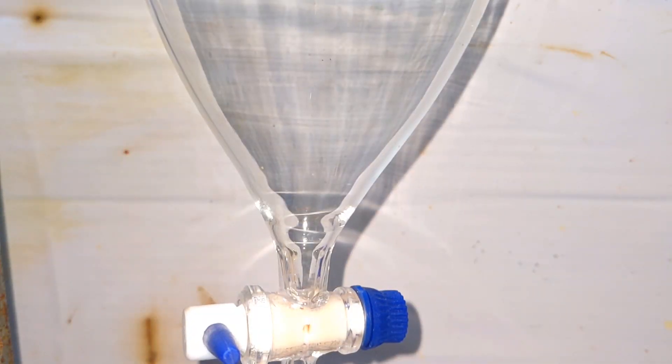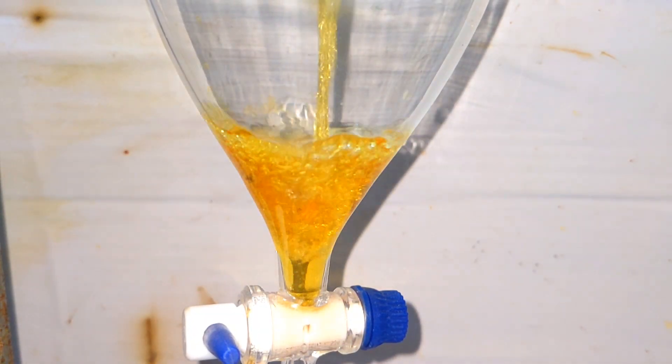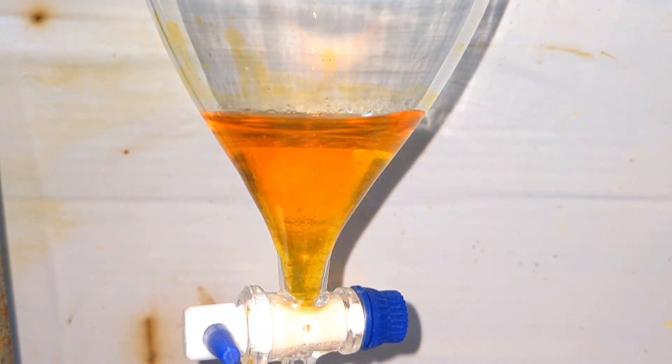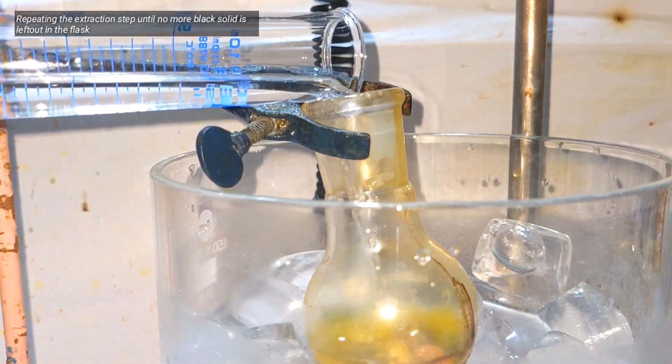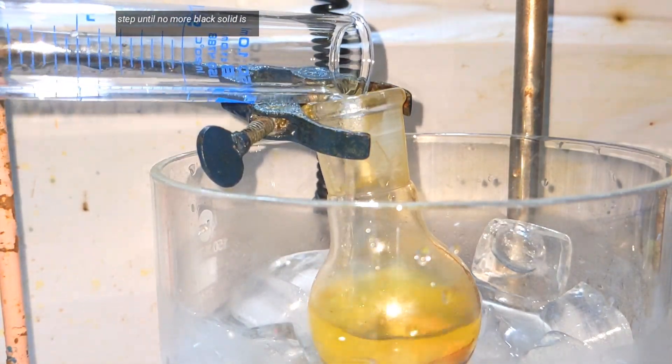The solution was then placed into a separatory funnel. The ether plus water washing was repeated in 20 milliliter sessions until all the fluorescein is extracted to the ether layer.